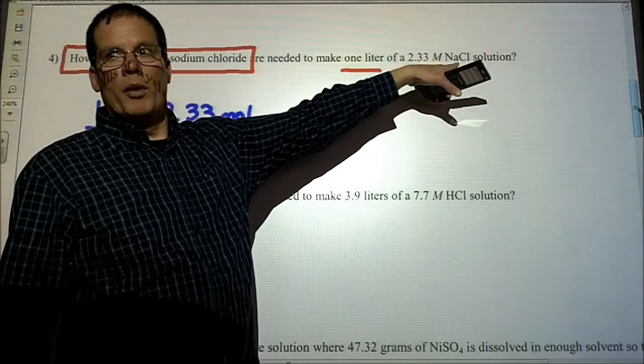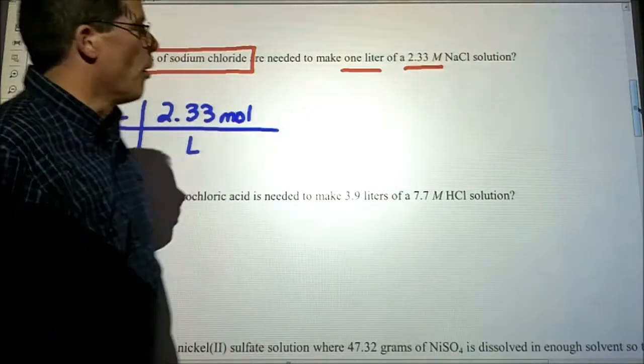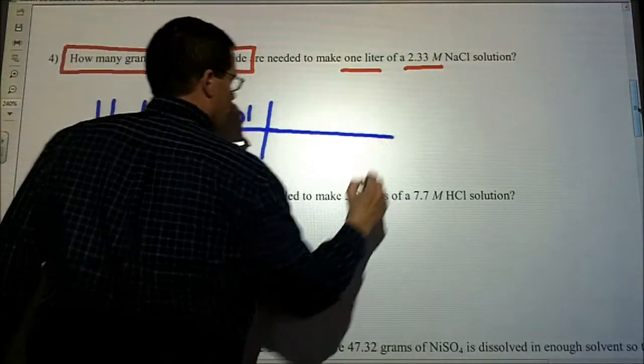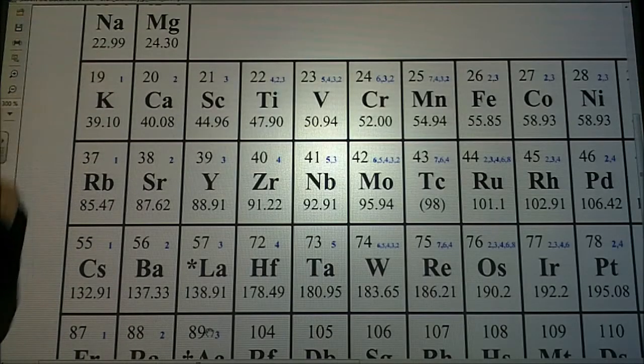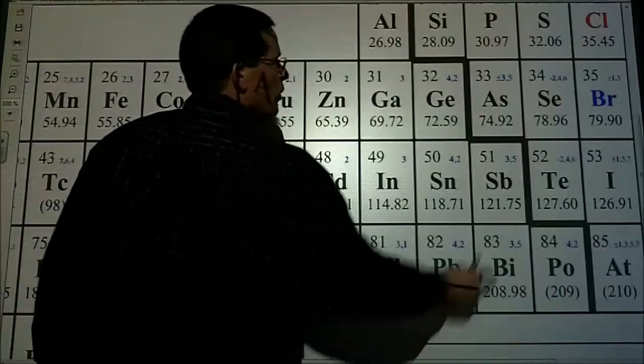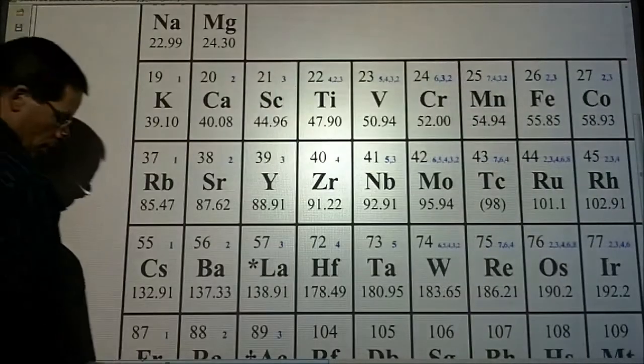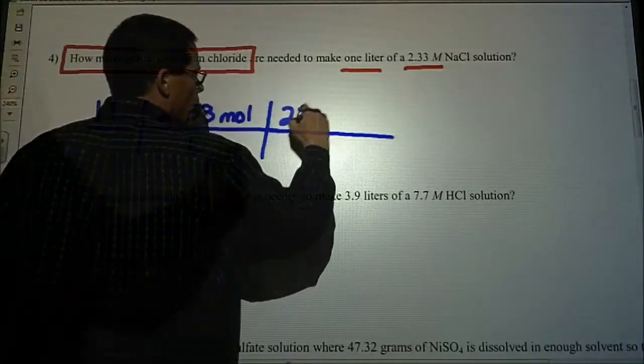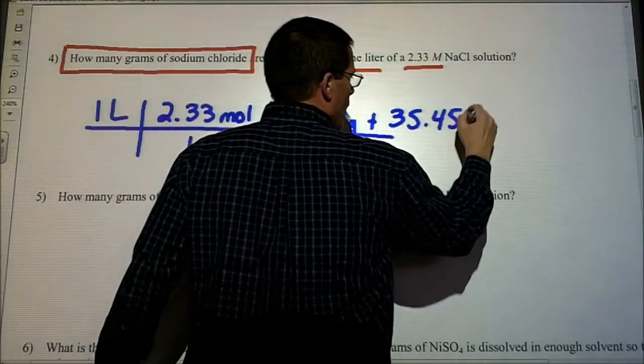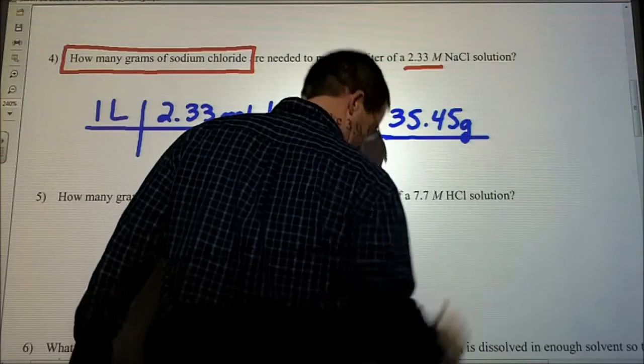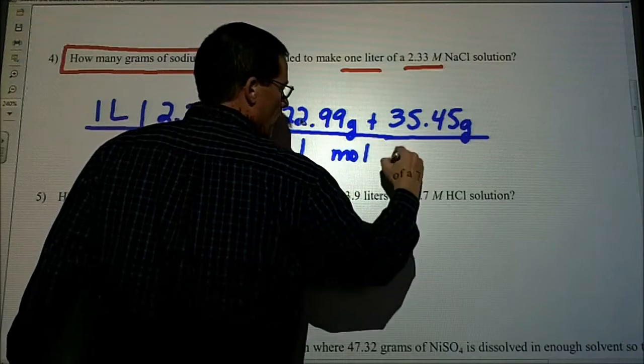Even if I didn't give you the formula, you should still be able to recognize or write the formula for sodium chloride. The molar mass for sodium is 22.99 and the chlorine is 35.45. Always have that periodic table available in front of you. 22.99 grams for the sodium and 35.45 grams for the chloride, and that is in one mole of sodium chloride.